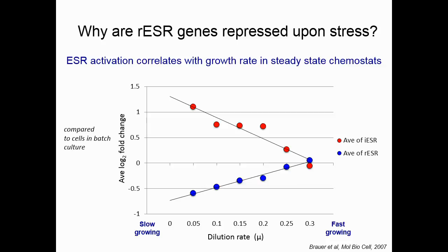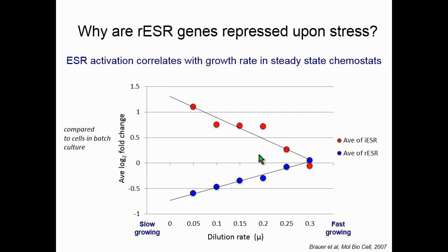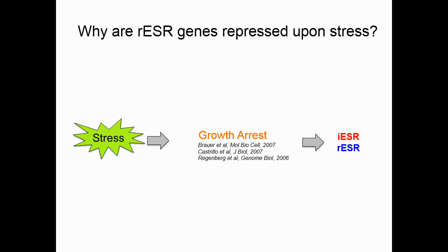In 2007, Brown et al. measured transcriptome changes in cells growing in steady-state chemostats with different growth rates, and compared those transcriptome changes to cells in batch culture. As shown here, cells with a faster growth rate have little or no ESR activation — the blue represents the average of rESR genes, and the red represents the average of iESR genes — while slower growth rates show highly activated ESR. They observed a correlation between growth rate and ESR activation, and this led to the hypothesis that ESR activation upon stress might be due to transient growth arrest.